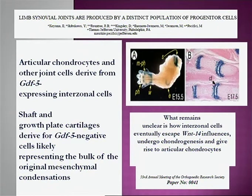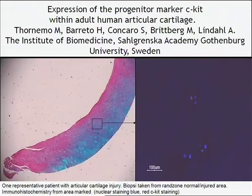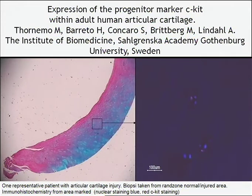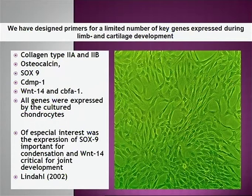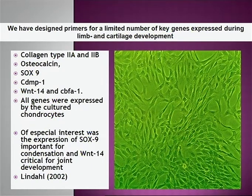Articular chondrocytes and other joint cells derive from GDF5-positive interzone cells, while shaft cartilage derives from GDF5-negative cells. When we look at cartilage from the surrounding area of a lesion, we can find progenitor cells — the pink spots — which could be ancestors of the interzone cells. We designed primers for key genes expressed during limb and cartilage development and found collagen type 2A and B, osteocalcin, SOX9, CDMP1, WNT14, and CBFA1 are all also expressed when chondrocytes are expanded for transplantation.